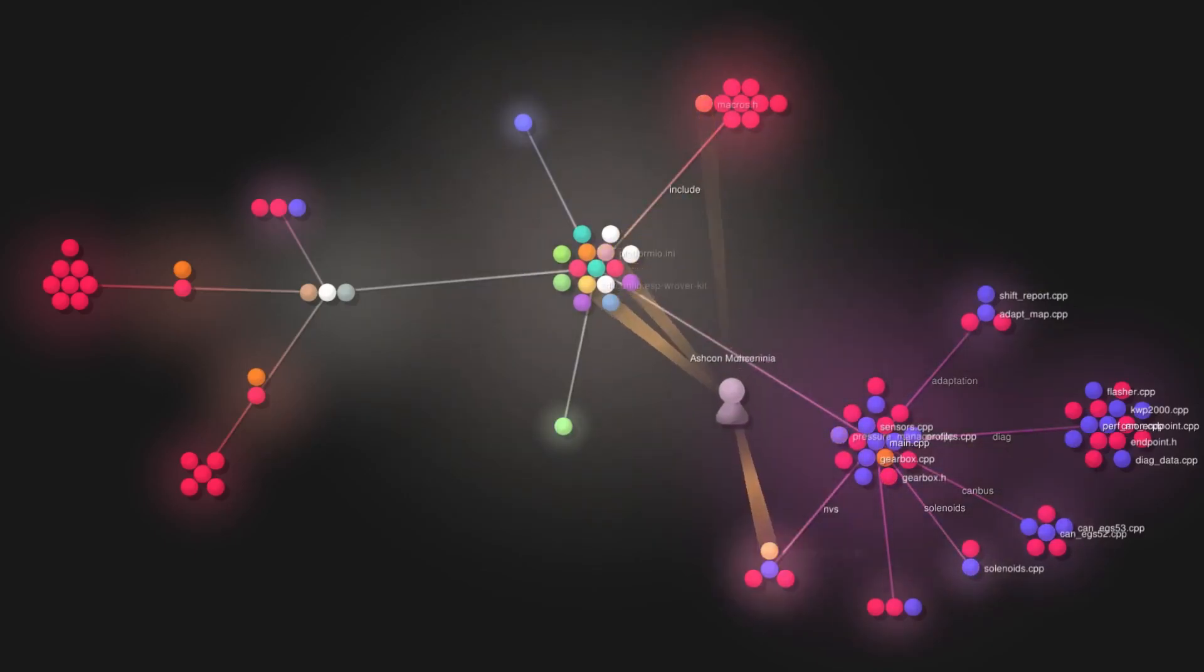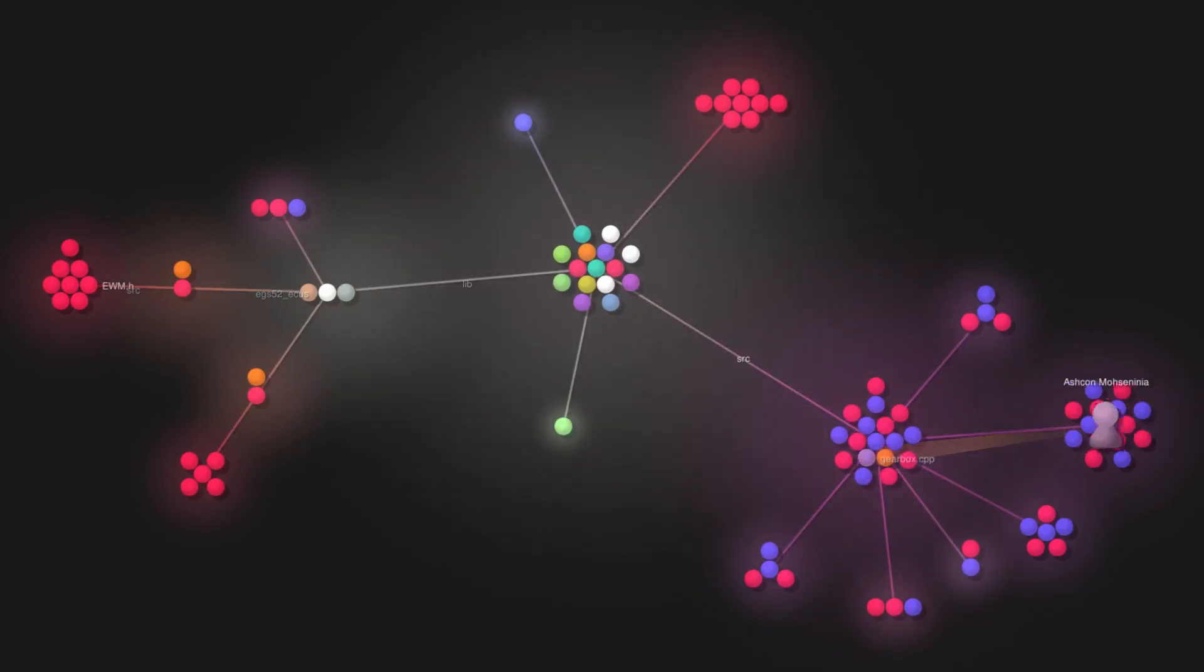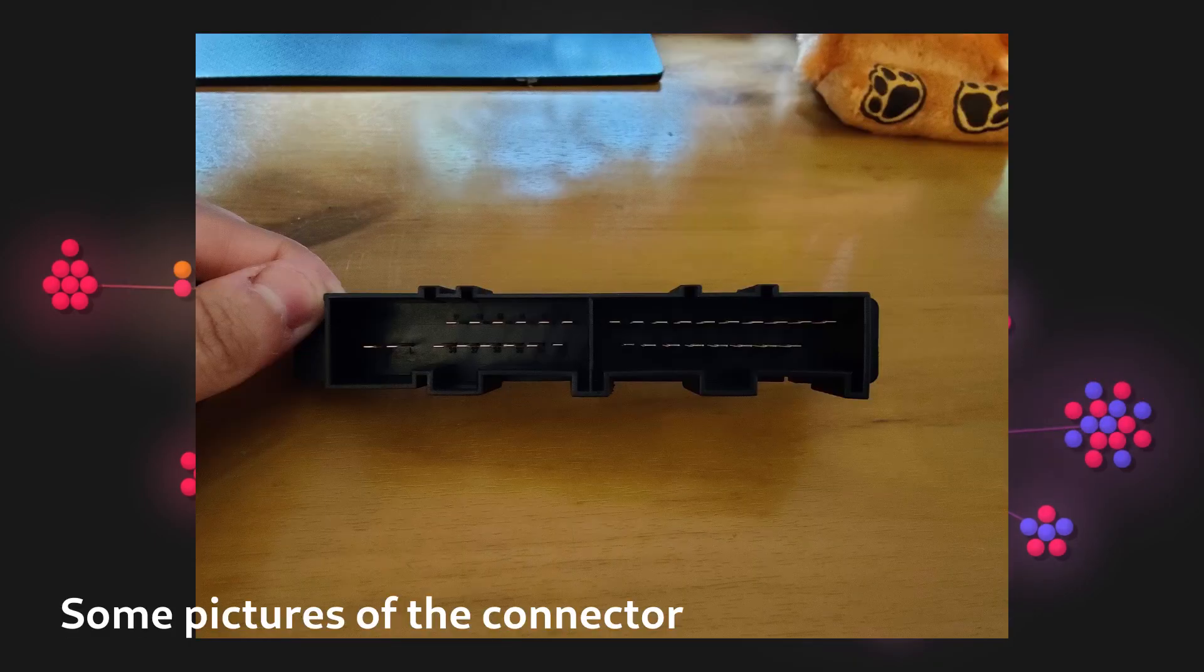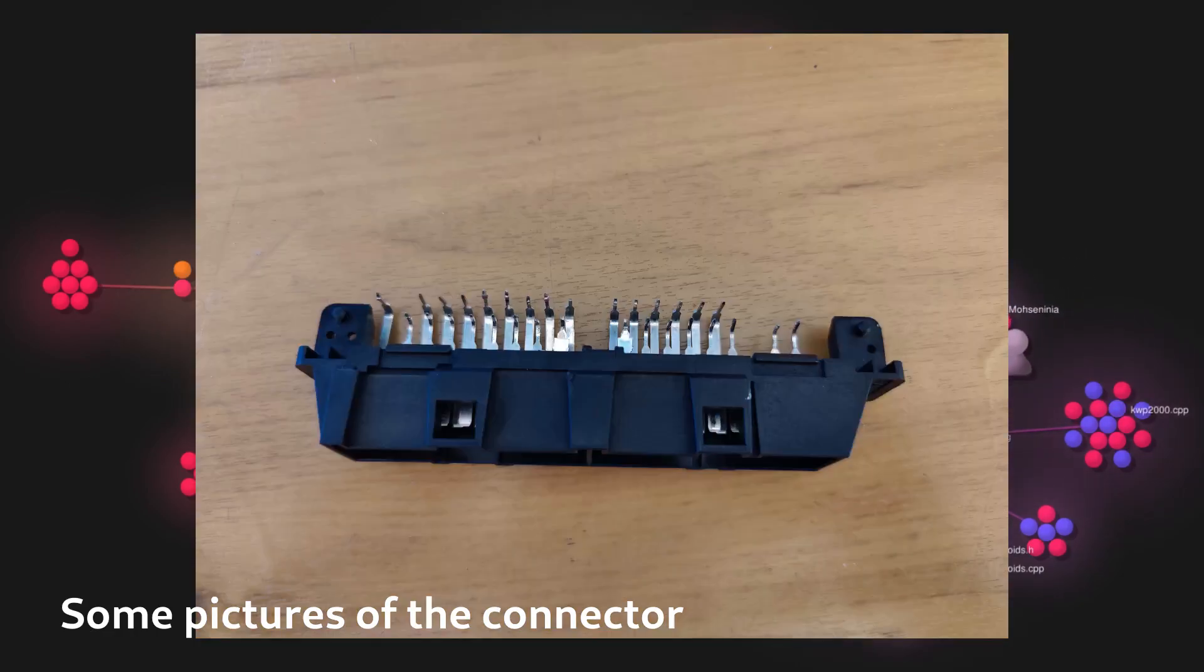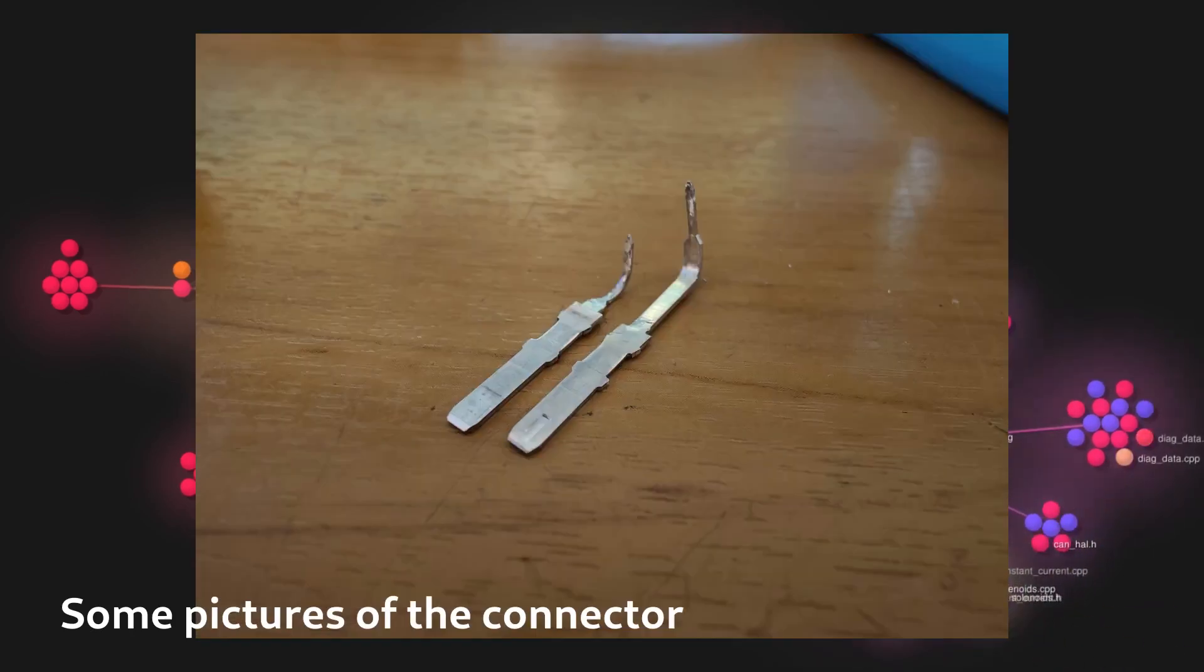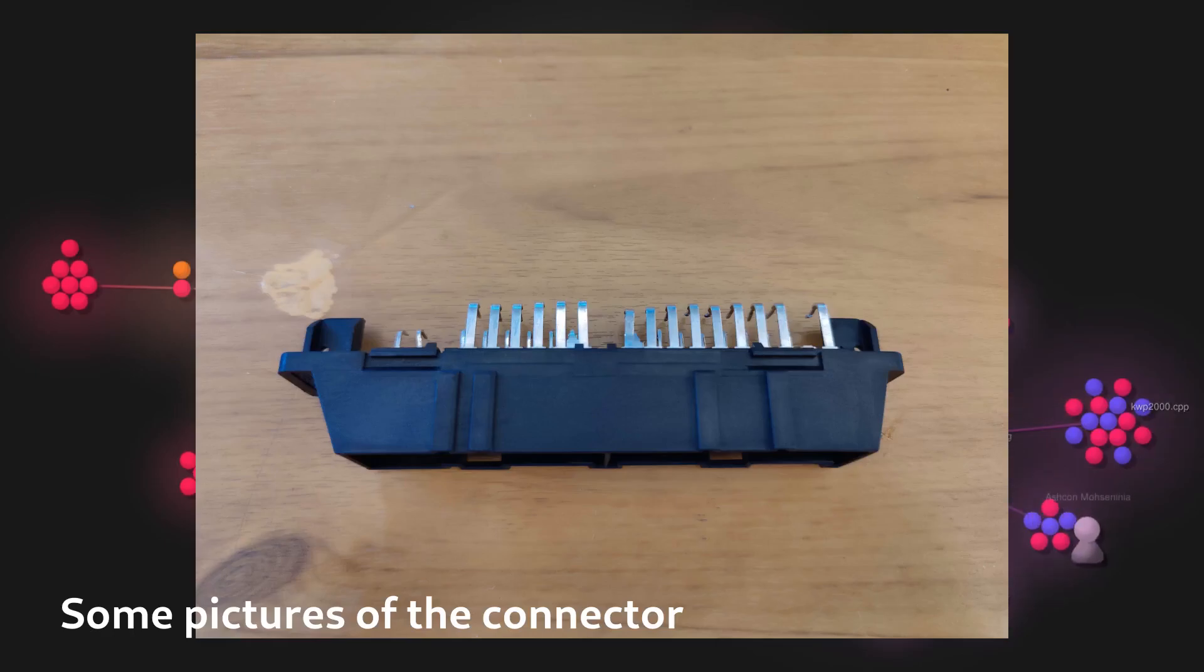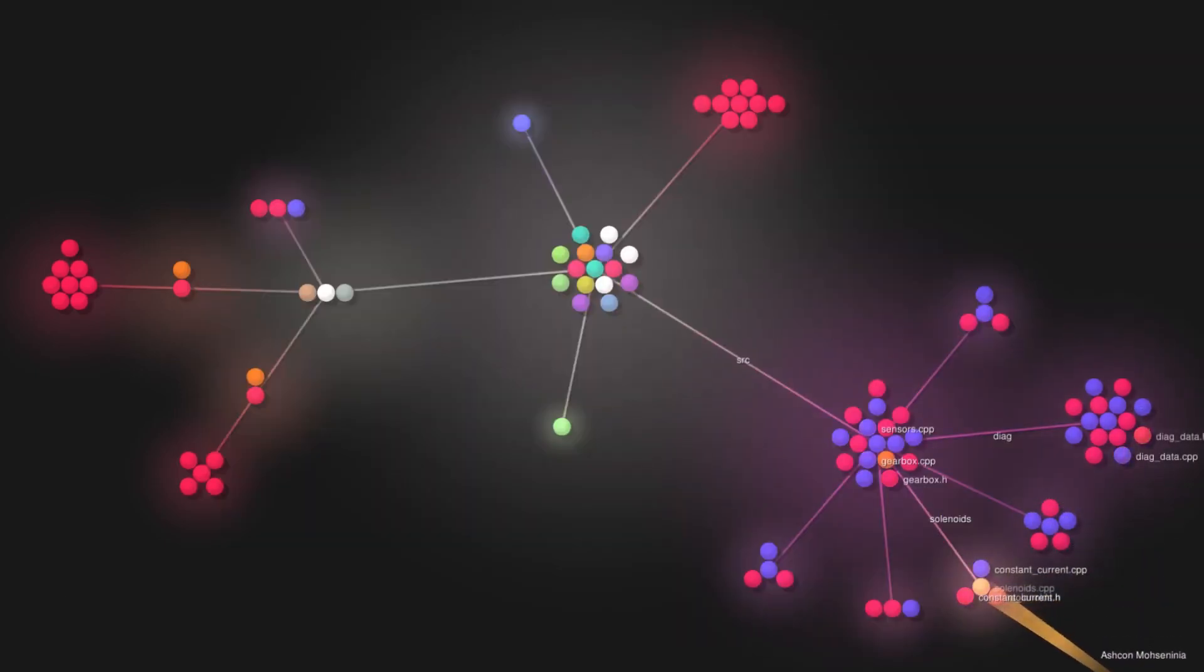The final problem I'm having to solve before the release of this TCU to the public is getting the connector for the TCU. The 722.6 TCU ships with a custom connector that is specific to this ECU, and not a general AMP connector which is found on a lot of engine ECUs. Therefore, currently, whenever I ship TCUs to my testers, I'm currently buying stock EGS modules from eBay and removing the connectors and putting them on my TCU. Whilst this is a good short-term solution to this issue, it's clearly not sustainable. Therefore, if any of you people watching know how I can obtain this connector or make one from scratch, please let me know in the comments.